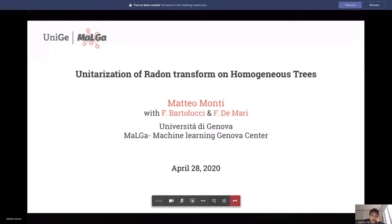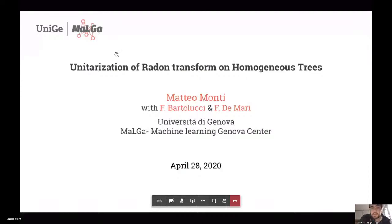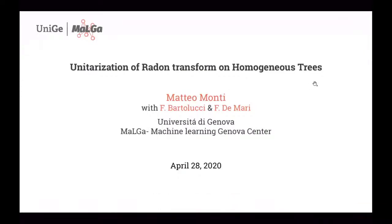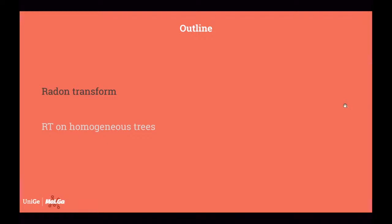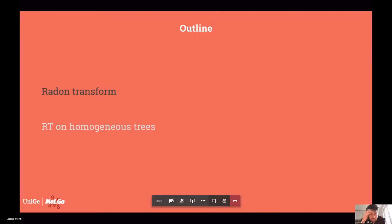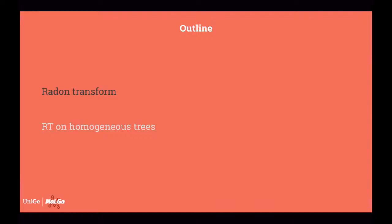From the University of Genova — we are all Malga members. The main topic will be the Radon transform on homogeneous trees, and in particular we will analyze the unitarization problem. I decided to divide the talk into sections: in the first one I will introduce the Radon transform in a general setup and we will look at the reconstruction problem and a little bit of state of the art. In the second part we focus on homogeneous trees and our result.